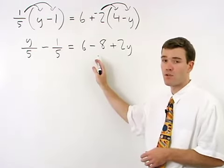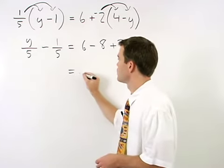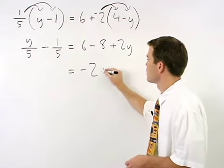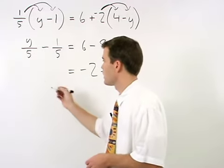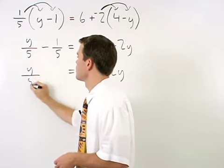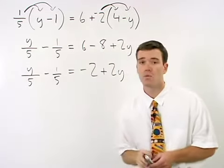And notice that we can go one step further with the right side of the equation, as it simplifies to negative 2 plus 2y. Bring down the y over 5 minus one-fifth, and you're ready to get rid of the fractions.